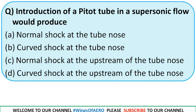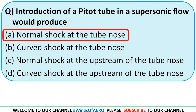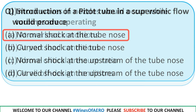Interaction of a pitot tube in supersonic flow would produce — a normal shock at the tube nose, a curved shock at the tube nose, a normal shock upstream of the tube nose, or a curved shock upstream of the tube nose? In a pitot tube measuring supersonic flow, a normal shock is produced at the nose itself. So the right option is option A.